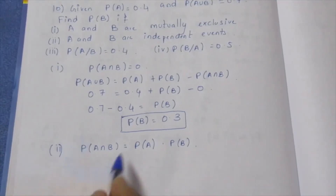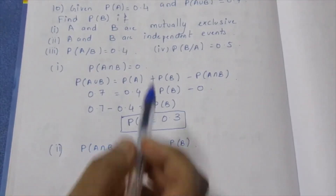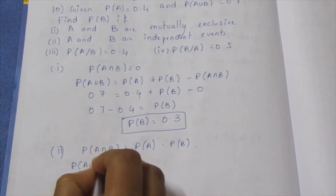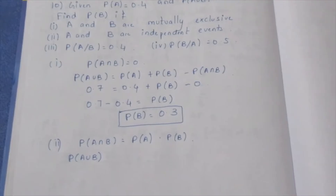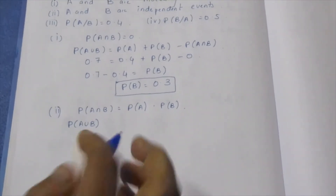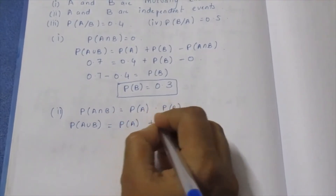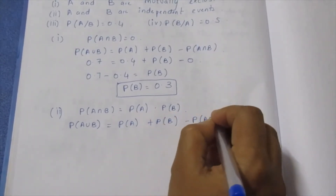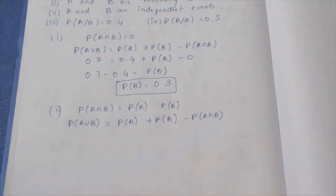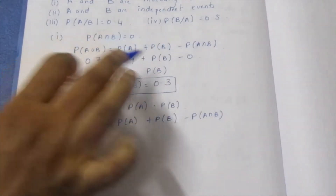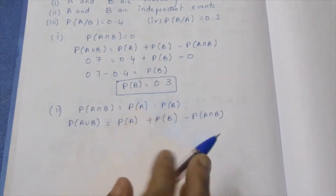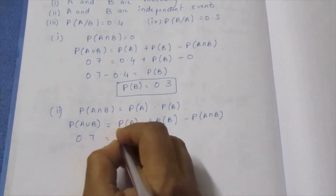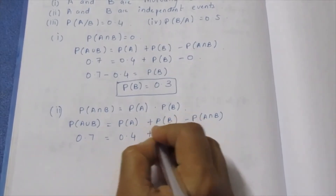If we know P(A∩B), we can use the union formula: P(A∪B) = P(A) + P(B) − P(A∩B). Here P(A∪B) = 0.7, P(A) = 0.4, and P(B) is what we need to find. Note: the first subdivision had P(A∩B) = 0, but this is the independent events case.